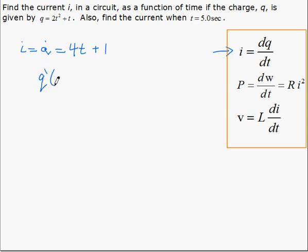The derivative, or i, at 5, the second part of the question, is simply 4 times 5 plus 1, or 21 amps.